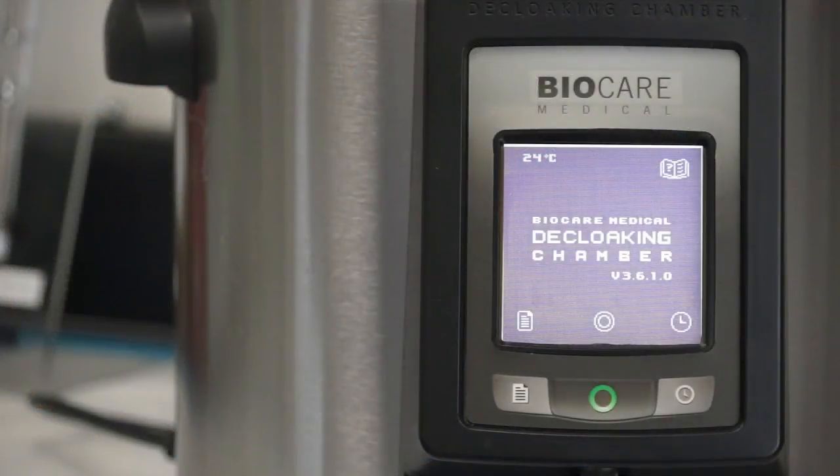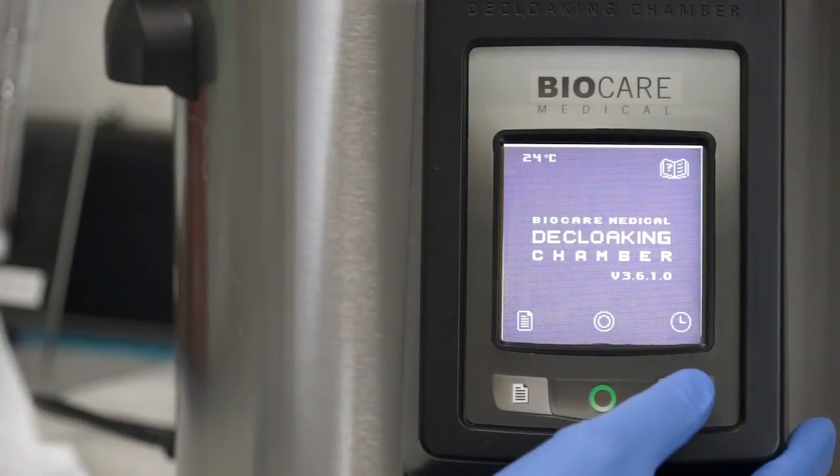After plugging the de-cloaking chamber next-gen system into an appropriately grounded outlet, the home screen for the system firmware will appear. To set the correct date and time for the system, push the button under the clock icon.